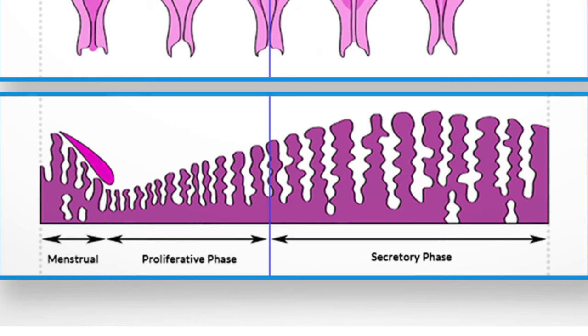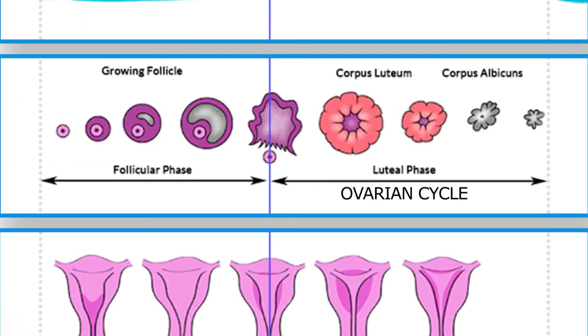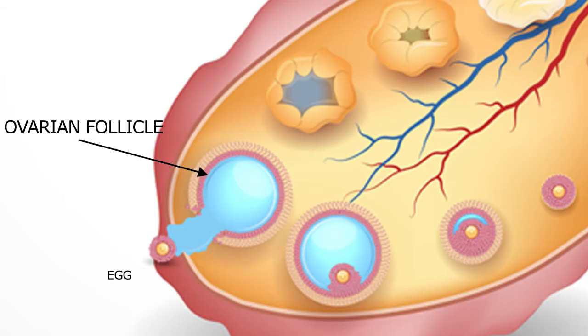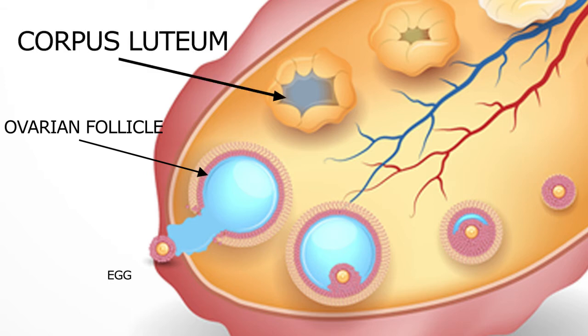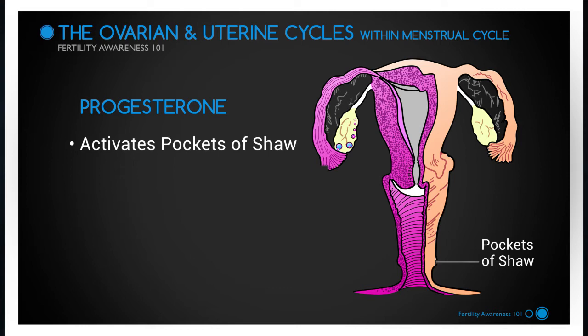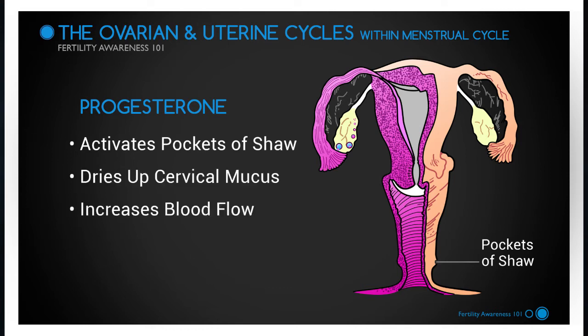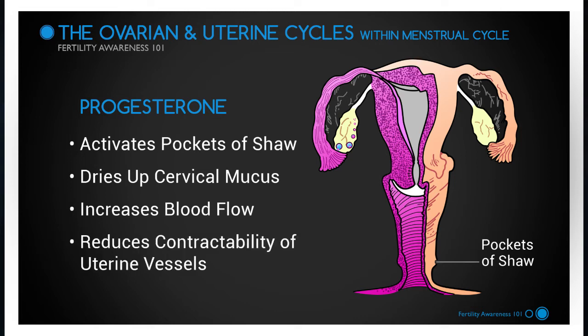The third phase, or secretory phase, of the uterine cycle corresponds to the luteal phase of the ovarian cycle. The luteal phase begins after ovulation. Once the egg leaves the follicle, there is an indentation remaining in the ovary called the corpus luteum that produces progesterone. Progesterone acts on the uterine structures in several ways. First, it activates the pockets of Shaw, which dry up the cervical mucus. Progesterone also increases blood flow and uterine secretions and reduces the contractibility of the uterine vessels, thereby making the endometrium receptive to implantation of the new human life known as the embryo, or more precisely at this time, the blastocyst.